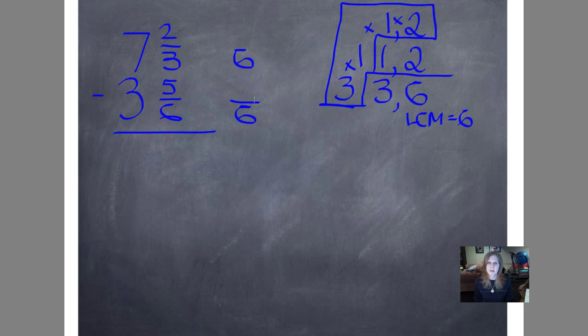So I'm going to write my 6 right here, my new common denominator or same denominator. And I'm going to leave my whole numbers here for just a minute while I come up with my equivalent fractions. And I ask myself, I'm going to go ahead and change my pen color. What do I do to this 3 to get 6? And I multiply it times 2. 3 times 2 is 6. So whatever I do to my denominator, I have to do to my numerator. 2 times 2 is 4. Now I'm going to come down here and do this one. What do I do to 6 to get 6? Times 1. So 5 times 1 is 5.